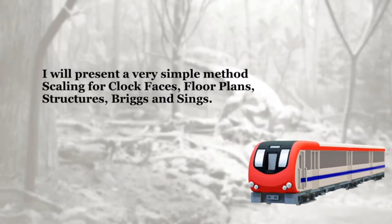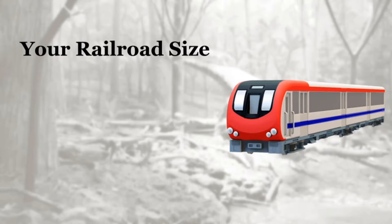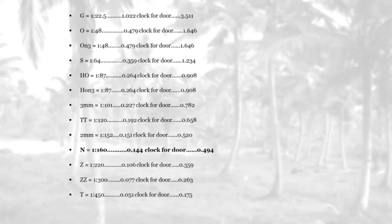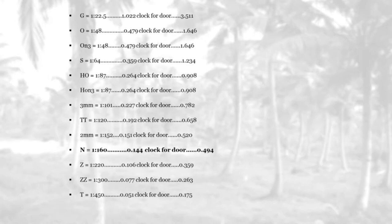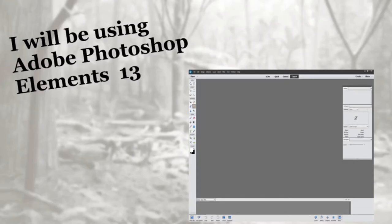I will be presenting a simple method for rescaling items like clock faces, floor plans, structures, bridges, and signs for your layout. I created a chart for the mathematics you'll be using. N scale, which is about three-quarters of the way down on the page, equals 1:160 scale. In this example, using a clock face for N scale model railroading, it's going to be 0.144 inches. For reference, most doors are 72 inches, which converts to 0.4944 inches in N scale.